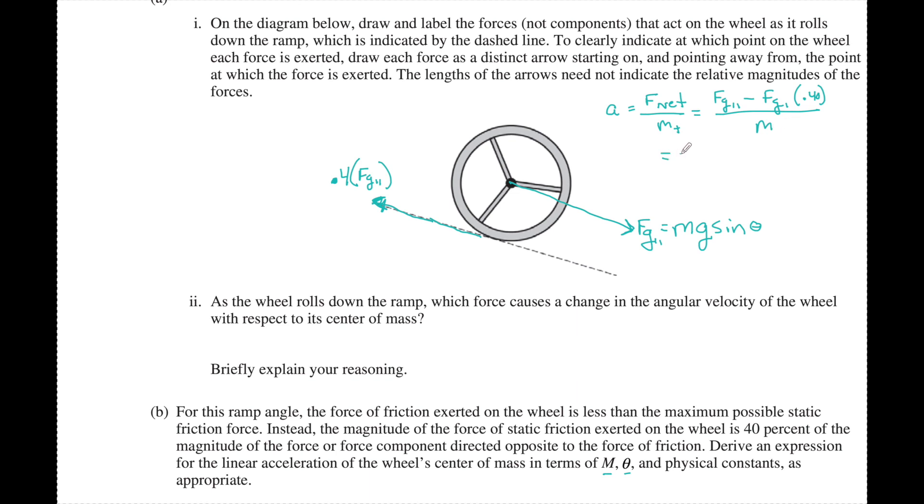So I can clean that up and say mg sin theta minus 0.4 times mg sin theta, all over m. The m's cancel, I can factor out a g sin theta, so I have g sin theta times one minus 0.4.